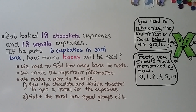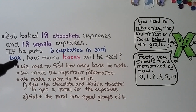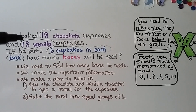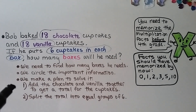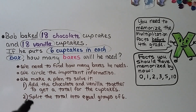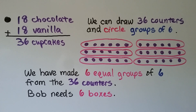Bob baked 18 chocolate cupcakes and 18 vanilla cupcakes. He puts six cupcakes in each box. How many boxes will he need? We need to find how many boxes he needs for his cupcakes. We circle the important information — he has 18 chocolate and 18 vanilla and puts six in each box. We make a plan: we add the chocolate and vanilla together to get a total, then split the total into equal groups of six. 18 plus 18 equals 36 cupcakes altogether.